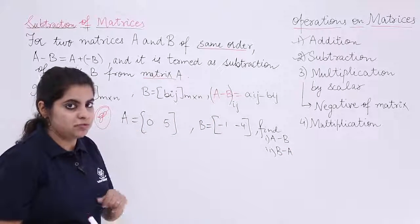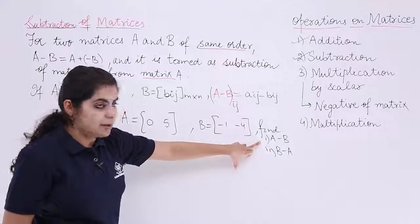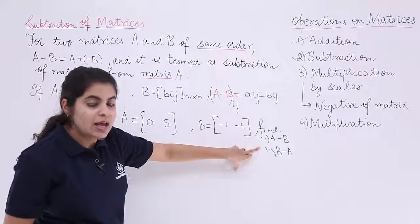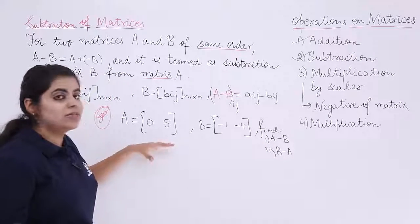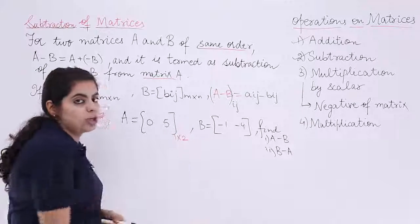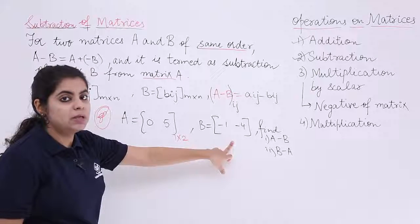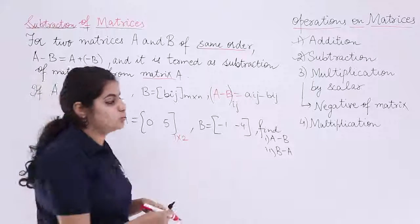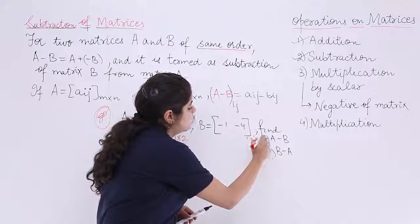Now let's see the first part first. I have A minus B to be computed. I know that A is given to me as a matrix wherein I have one row and two columns. Again talking about the matrix B, I have one row and two columns. So it is 1 by 2 matrix.